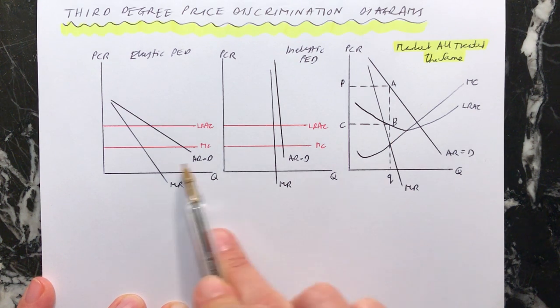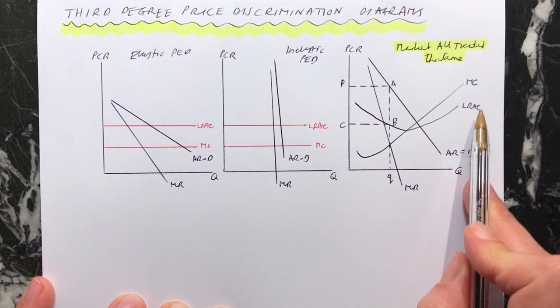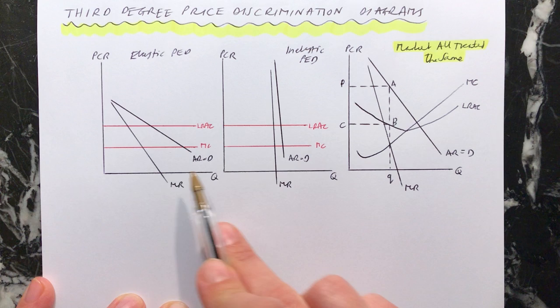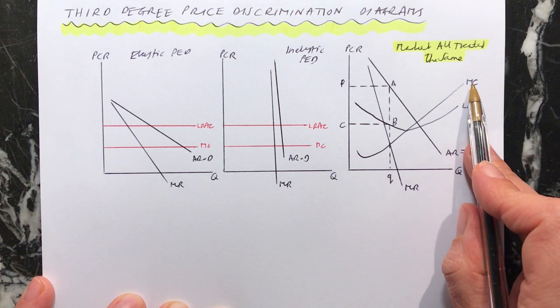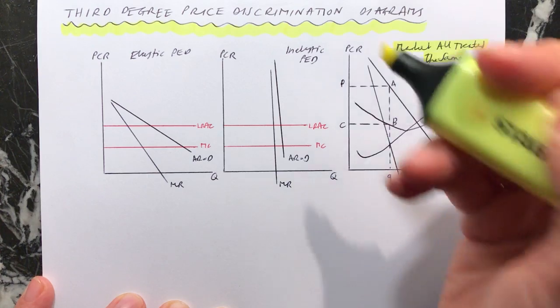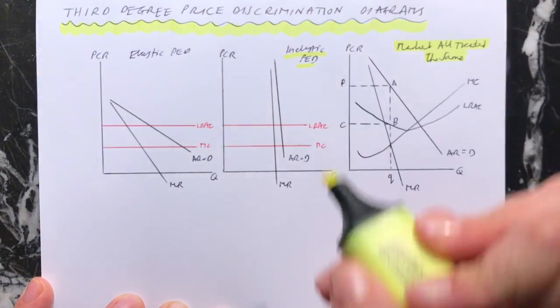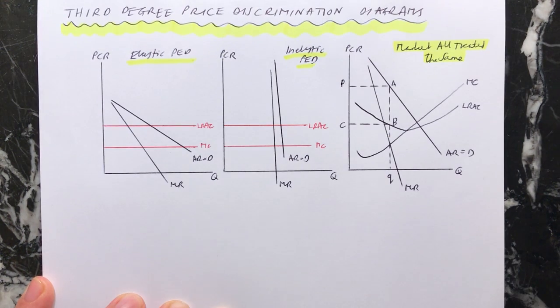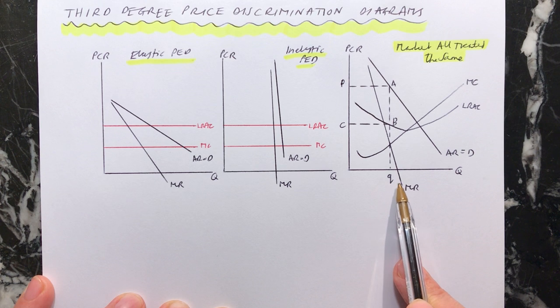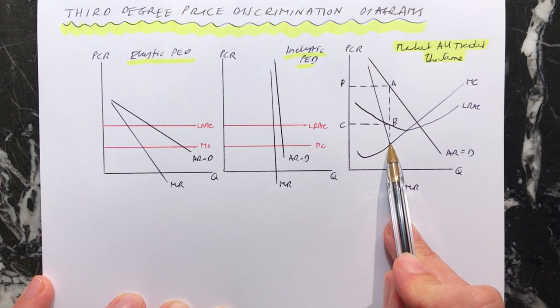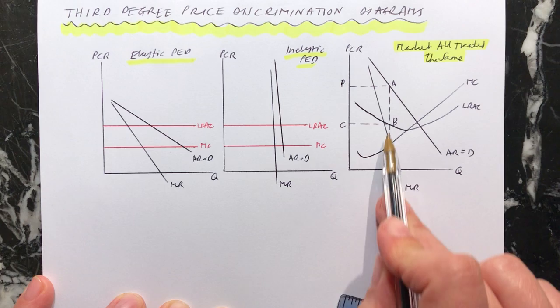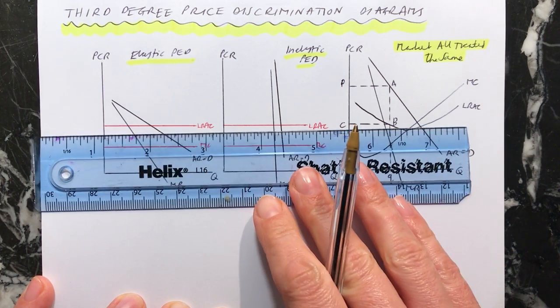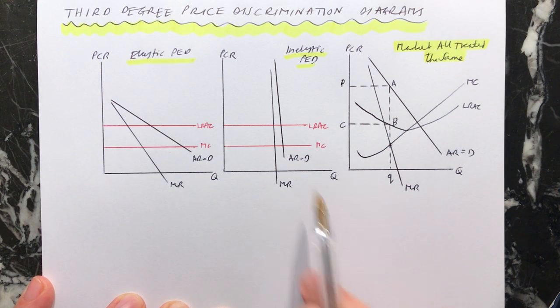So let's take across, we need to take across our marginal costs and our long run average cost. Remember, it's exactly the same product being sold in these markets as in this market. It's just the same product. So our marginal cost and our average cost is going to be exactly the same. But now we're just going to be charging a different price to the people with inelastic PED to the people with elastic PED. And then you can just do as you would normally over here to find out what your supernormal profit is.